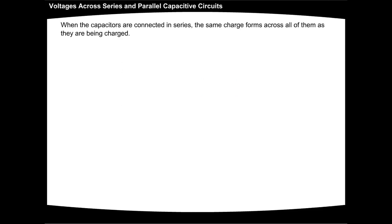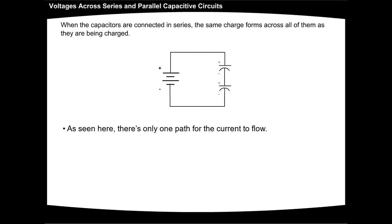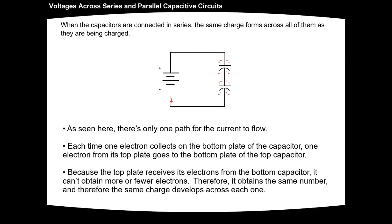When the capacitors are connected in series, the same charge forms across all of them as they are being charged. This diagram shows how this occurs. As seen here, there's only one path for the current to flow. Each time one electron collects on the bottom plate of the capacitor, one electron from its top plate goes to the bottom plate of the top capacitor. Because the top plate receives its electrons from the bottom capacitor, it can't obtain more or fewer electrons. Therefore, it obtains the same number, and therefore the same charge develops across each one.